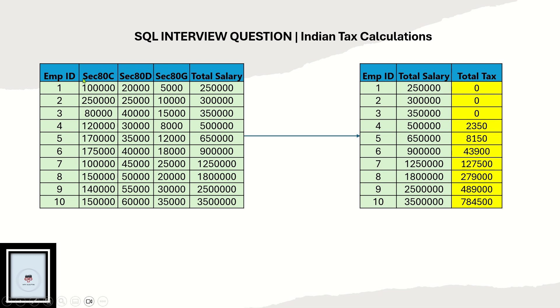You have a table with the columns employee ID, section 80C, section 80D, section 80G, and total salary. The output requires you to show employee ID, total salary, and the total tax.